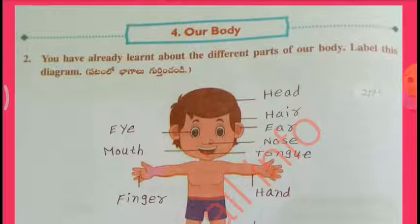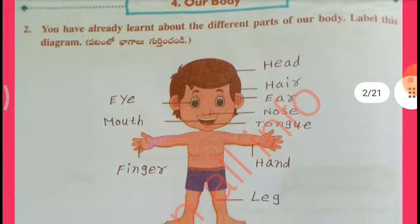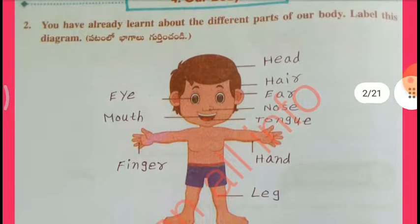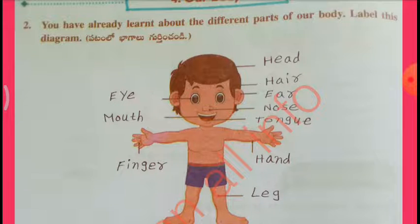You have already learned about the different parts of our body. Label this diagram: Eye, Mouth, Finger, Head, Hair, Ear, Nose, Tongue, Hand, Leg.